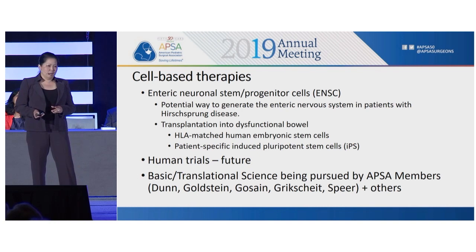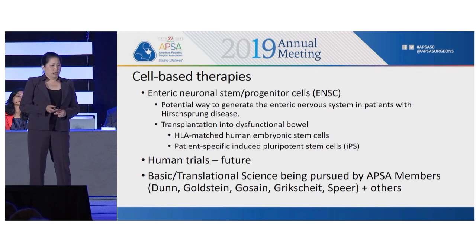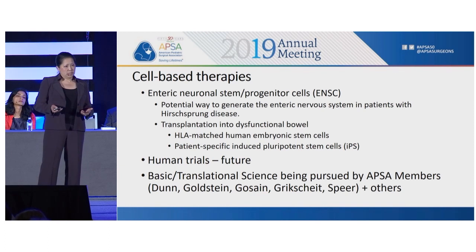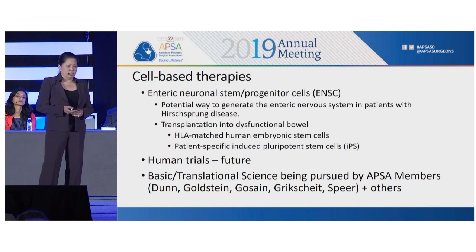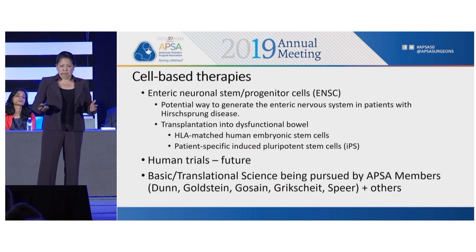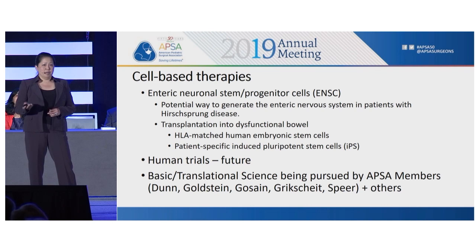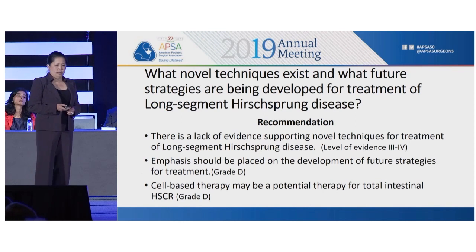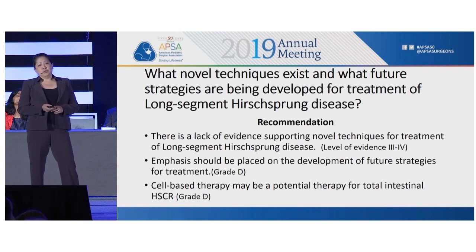The most exciting novel treatment for Hirschsprung's disease is cell-based therapy — using the potential for cell-based therapy to generate an enteric nervous system in the aganglionic bowel. This can be done with embryonic stem cells or iPS cells. Animal models have actually worked and have been shown to generate an enteric nervous system. Human studies are in the near future. There is a lack of evidence to support any novel techniques currently in the literature, so the emphasis should be placed on development of future strategies such as cell-based therapy.